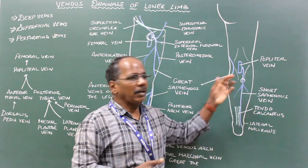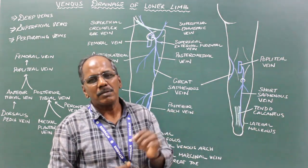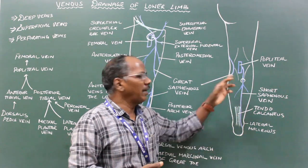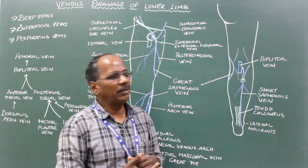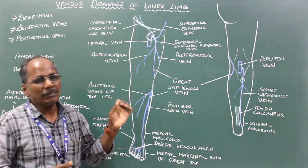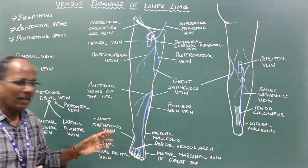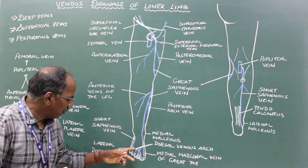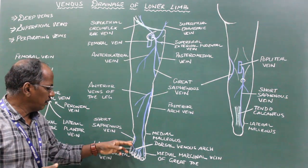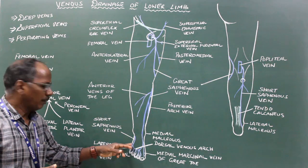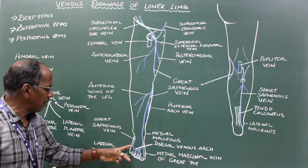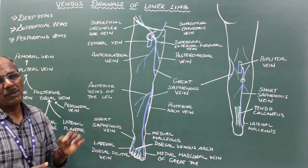The short saphenous vein is one of the major superficial veins of the lower limb. It is a postaxial vein of the lower limb. It is formed by the union of the lateral end of the dorsal venous arch of the foot and the lateral dorsal digital vein of the little toe.